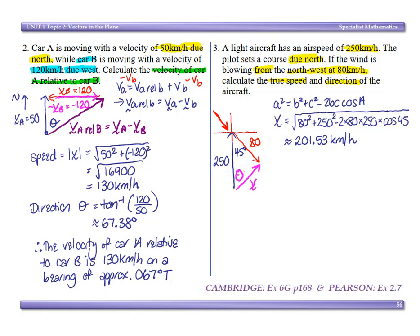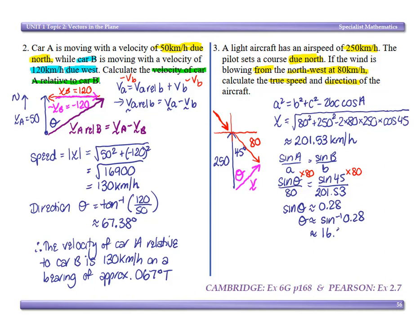Now I need this angle here, so I can use my sine rule. Plug in my information. I have to multiply both sides by 80. Go to my calculator. Sine theta is approximately 0.28. Theta is approximately inverse sine of that, which is approximately 16.30 degrees.